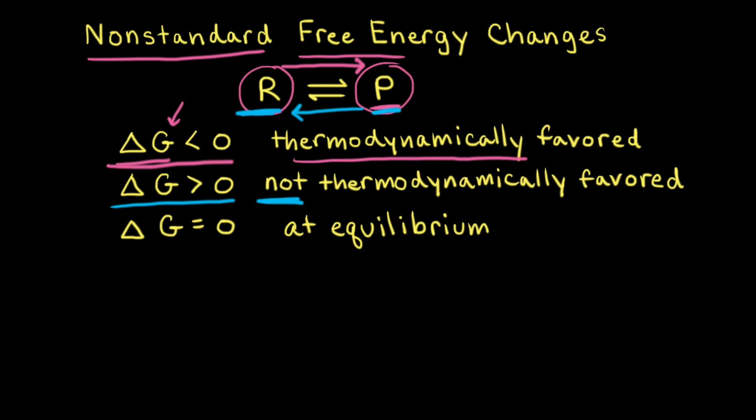As long as there's a difference in free energy between the reactants and the products, the net reaction will proceed either to the left or to the right. However, when there's no difference in free energy between the reactants and the products — where delta G is equal to zero — the reaction is at equilibrium, and the concentrations of reactants and products remain constant. It's useful to think about non-standard change in free energy as the driving force for a chemical reaction. When there's no difference in free energy, there's no more driving force and the reaction is at equilibrium.